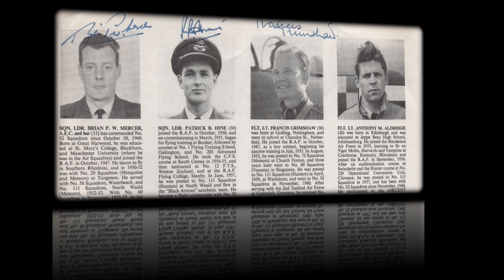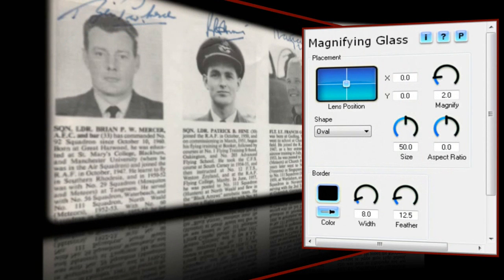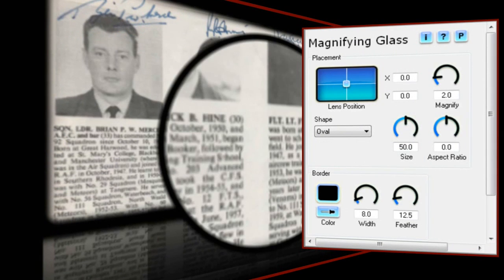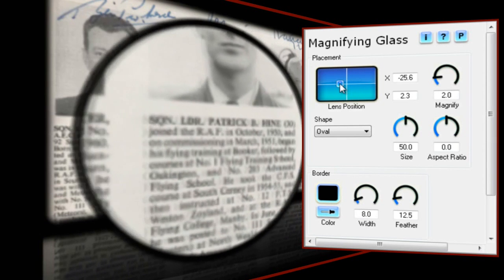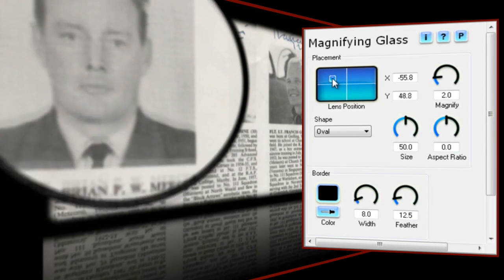That will mean I'll have to keyframe the start and end positions. So I'll start by adding an instance of Magnifying Glass and it defaults to this preset, which I'll use as a starting point for creating my own preset. Let's begin by moving the magnifying glass to its starting point using the lens position control, which lets me position the effect on my image.